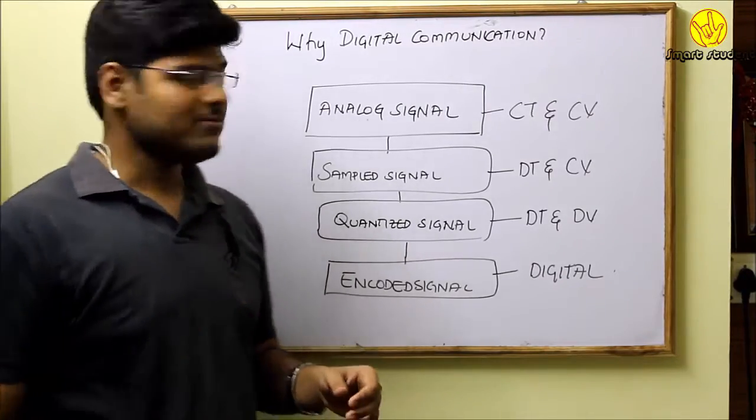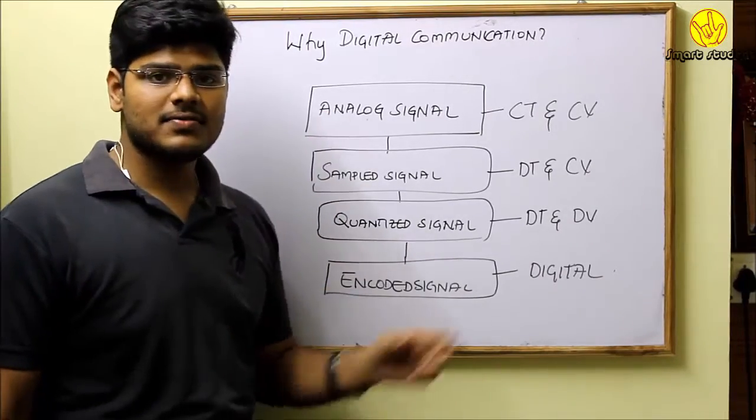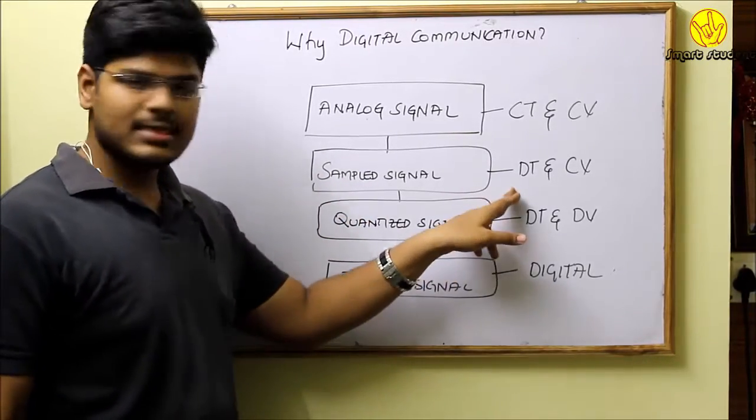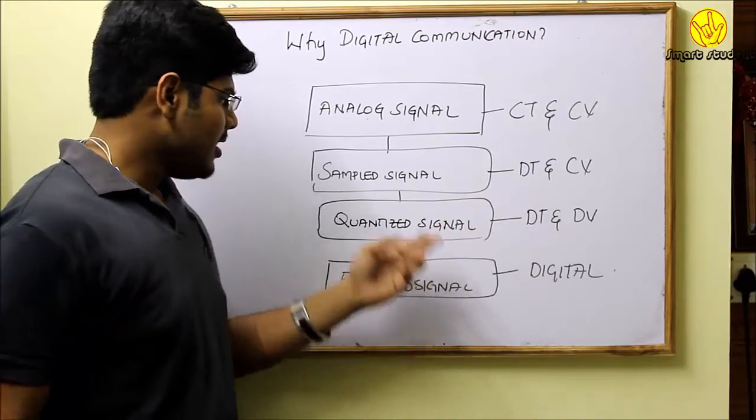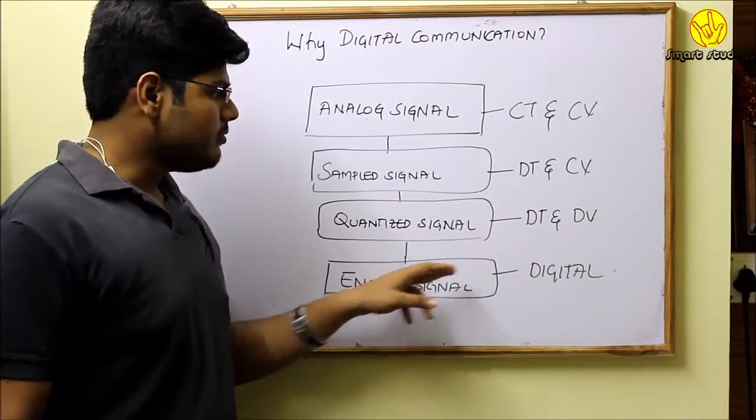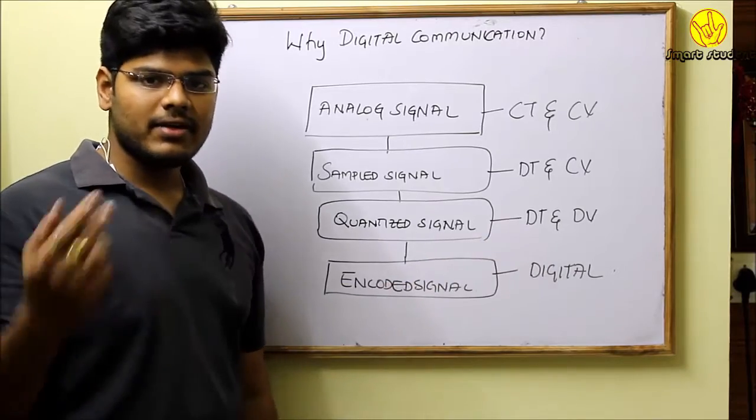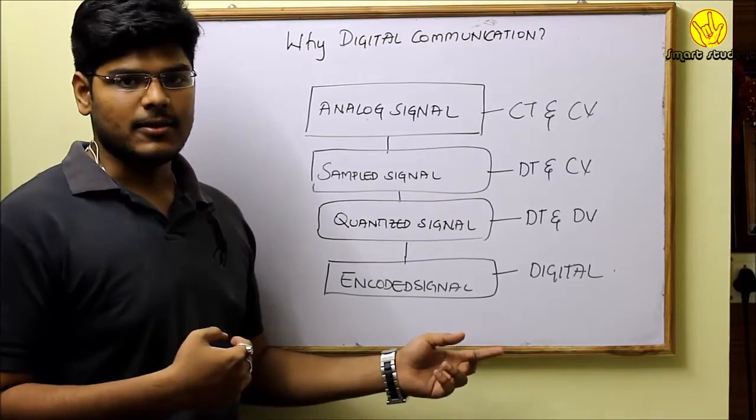Let us take a look at it once again. Initially, it is an analog signal which is continuous in time and continuous in value. Later, when it is sampled, we'll get the signal that is discrete in time but continuous in value. And one more time, when it is quantized, we'll get the signal that is discrete in time and discrete in value. Finally, when we encode that signal, we'll get the digital signal.